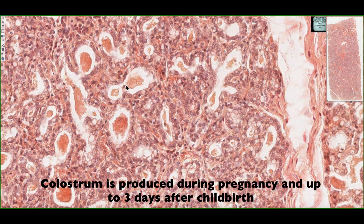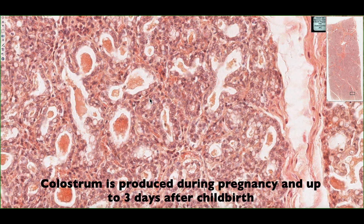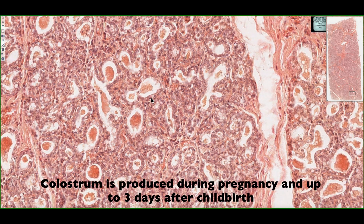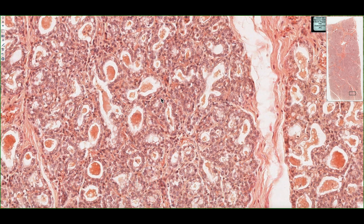The plasma cell secreting antibodies is important for the immunity of the newborn baby. Colostrum is secreted for approximately 3 days after the newborn baby is born. After that time, the secretory product of the mammary gland will change and it will become more of a lactating gland producing breast milk. We'll see that on the next slide.